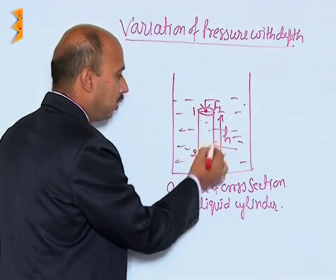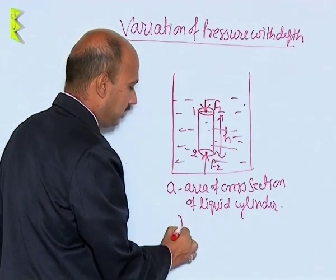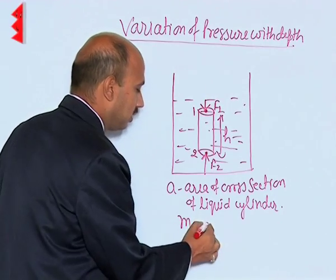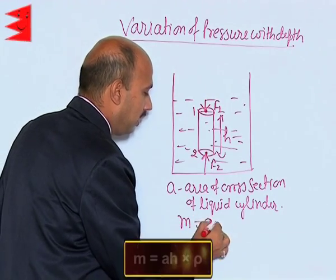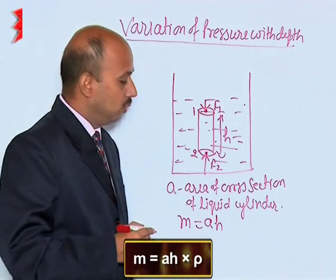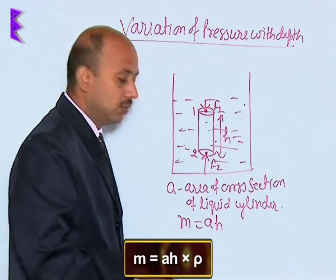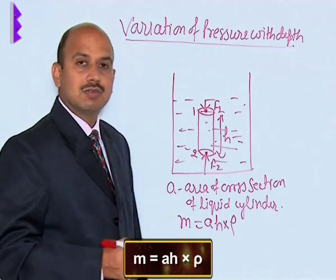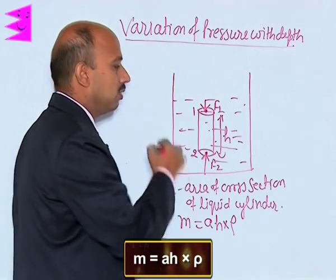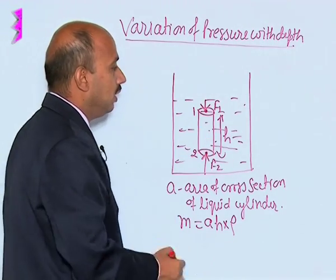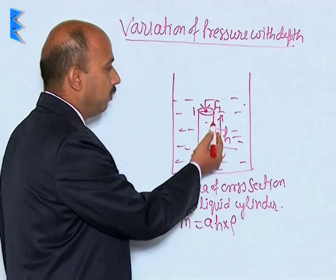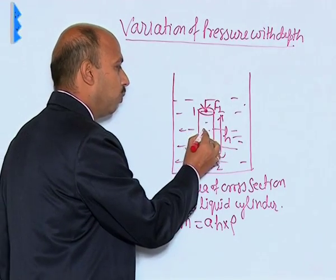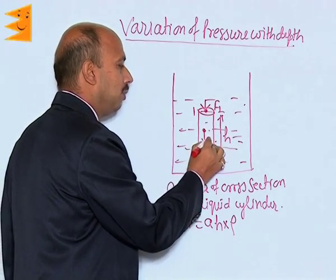The mass of the liquid in this imaginary cylinder can be written as volume times density: A × H × ρ, where A × H is the volume and ρ is the density of the liquid. So this is the mass of this liquid cylinder. There are two forces F1 and F2, and also the weight W of this liquid acting on it.